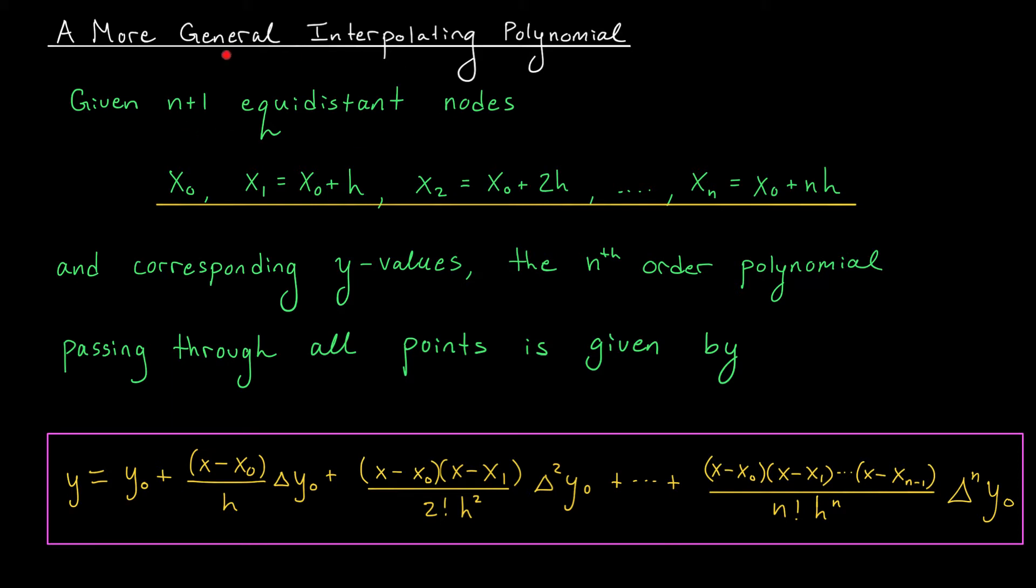So the setup is as follows. We start with n plus 1 equidistant nodes, or equidistant x values. Before, our x values were 0, 1, 2, all the way up to n. But now, I'm allowed to start wherever I like. I don't have to start at 0.